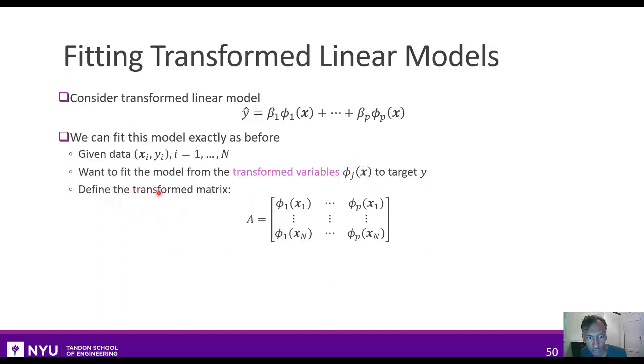Specifically, we define the transformed matrix in this case, where there are p columns, and in each column are the basis functions for the n samples. So this is an n by p matrix. In this case, on the training data, the vector of predicted values will just again be the matrix multiplication of this transformed matrix with the betas.